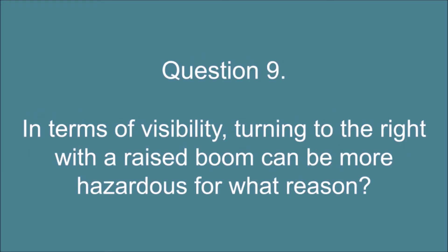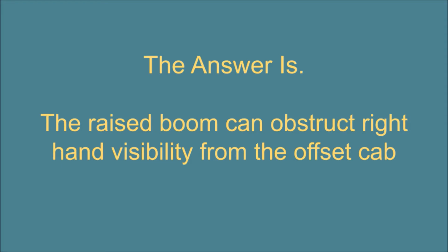Question 9. In terms of visibility, turning to the right with a raised boom can be more hazardous for what reason? The answer is: The raised boom can obstruct right-hand visibility from the offset cab.